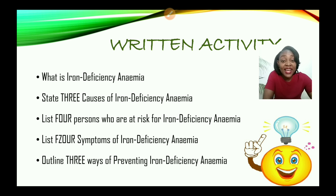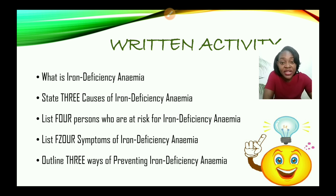At the end of today's session you should be able to: define iron deficiency anemia, state three causes, list four persons who are at risk, list four symptoms, and outline three ways to prevent iron deficiency anemia. Don't forget to subscribe, hit the notification bell, and share with persons who will find this information useful. Thank you for making it to Fairies Tutorials.